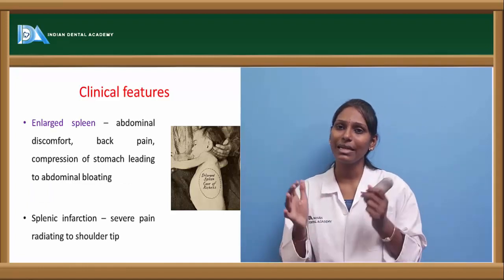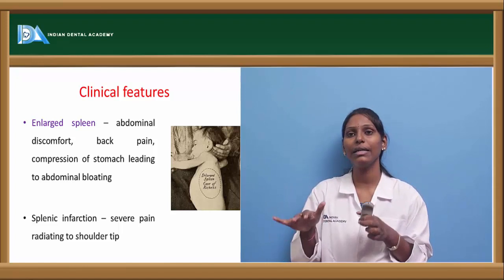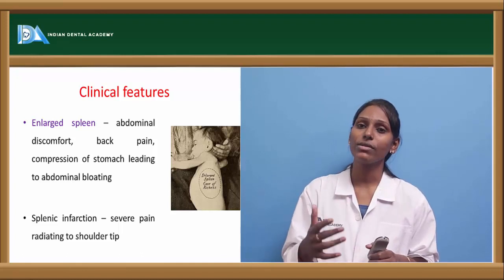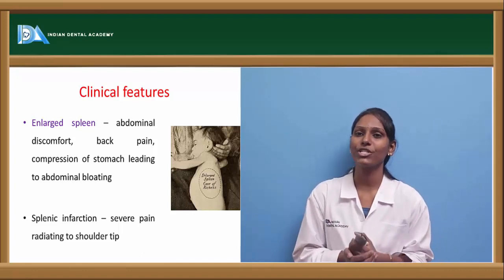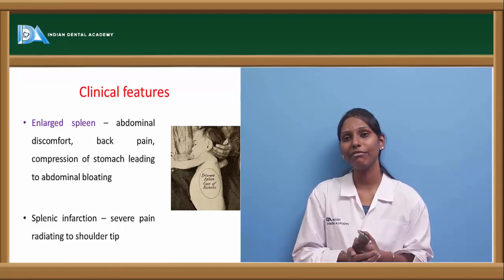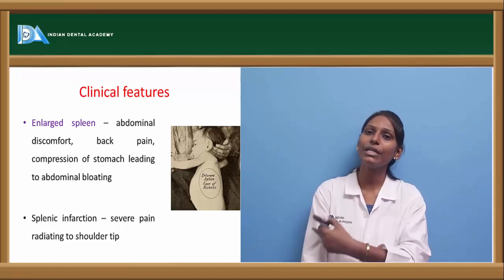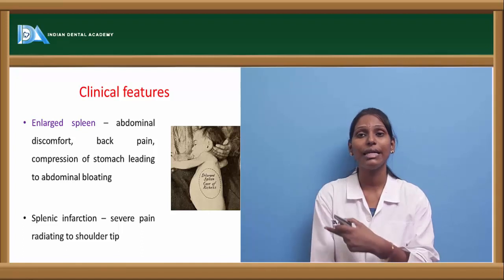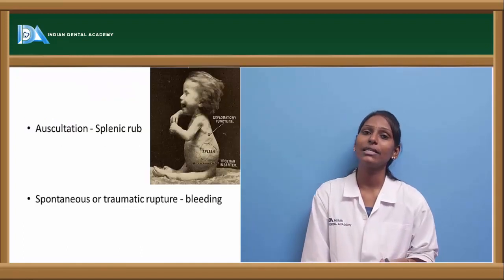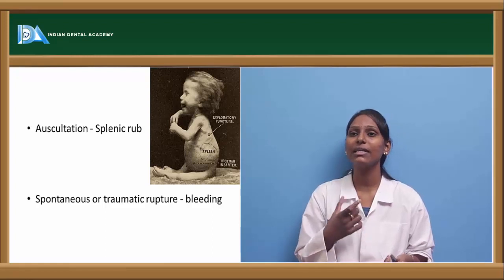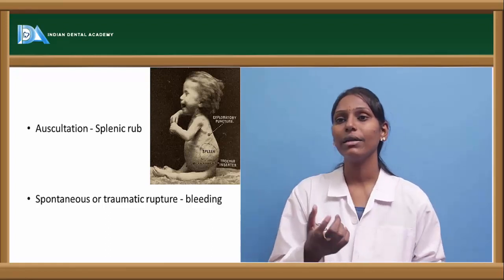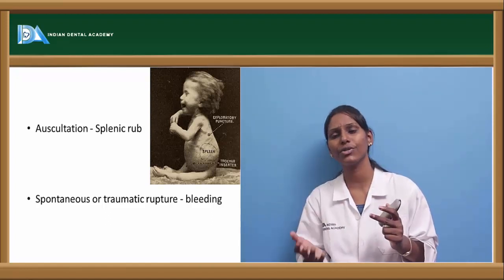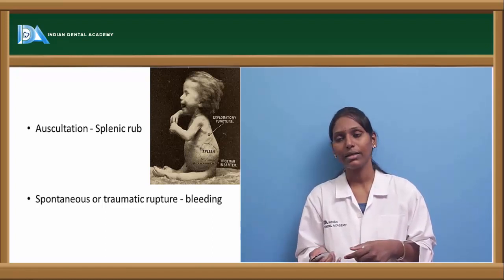Coming to clinical features — because of the enlarged spleen, there will be pressure on the abdomen leading to abdominal distension, pain, or tenderness. The patient will also have a feeling of abdominal bloating and compression of the stomach. In case of splenic infarction, there will be severe pain that usually radiates to the shoulder tip — a classical feature of splenic infarction. On auscultation, a splenic rub can be heard. In case of spontaneous or traumatic rupture, there will be bleeding.